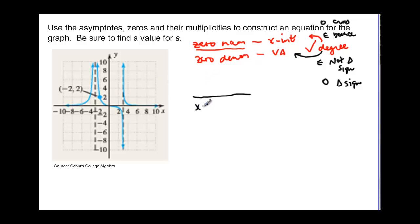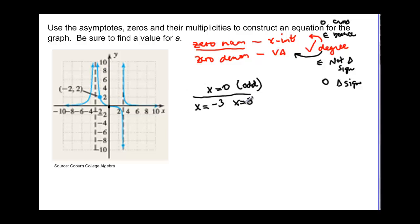We have vertical asymptotes at x = −3 and x = 3, and a single x-intercept at (0, 0). The x-intercept at 0 is odd because the graph crosses there. At x = −3, the graph is above the x-axis on both sides, so that factor must have an even degree. At x = 3, the graph is below the x-axis on the left and above on the right, so that factor must have an odd degree.